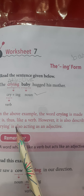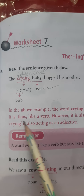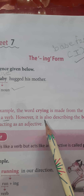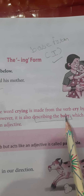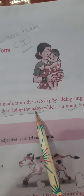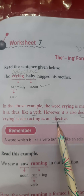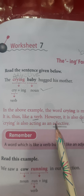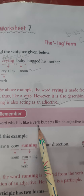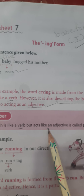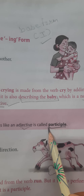The word 'crying' is made from the verb 'cry' by adding 'ing' and it is just like a verb. However, it is also describing the baby — what type of baby is it? So 'baby' is a noun here, and the word that qualifies a noun acts as an adjective. Jo bhi word noun ko qualify karta hai, uske baare mein additional information deta hai, usko hum adjective bolte hain. A word which is like a verb but acts like an adjective — it is called a participle.